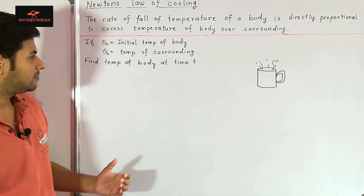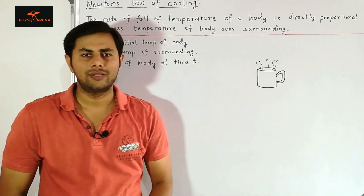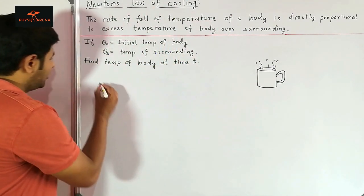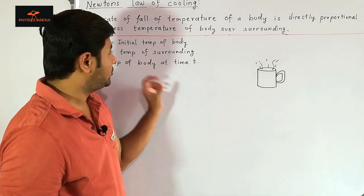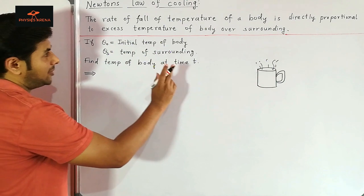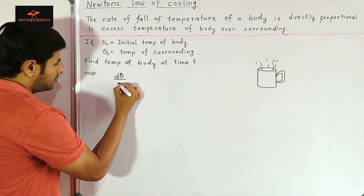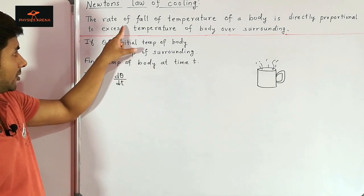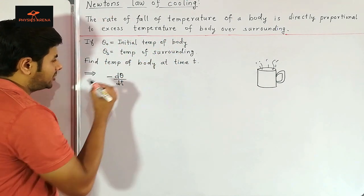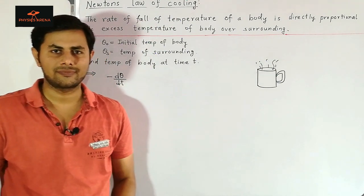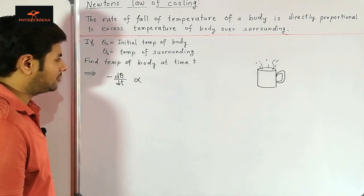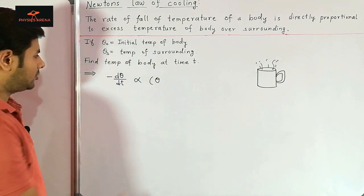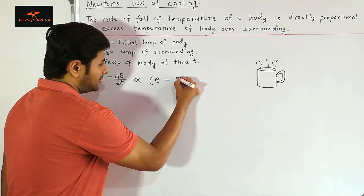The problem is we have to find the temperature of this body — the cup of tea or coffee — at some later time t. Newton's law says that the fall of temperature with respect to time, which is the change in temperature with respect to time, is directly proportional to the excess temperature of the body over the surrounding, which is theta minus theta s.